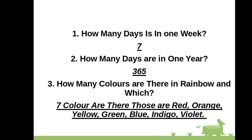Question 3: How many colors are there in a rainbow, and which are they? There are 7 colors: red, orange, yellow, green, blue, indigo, violet.